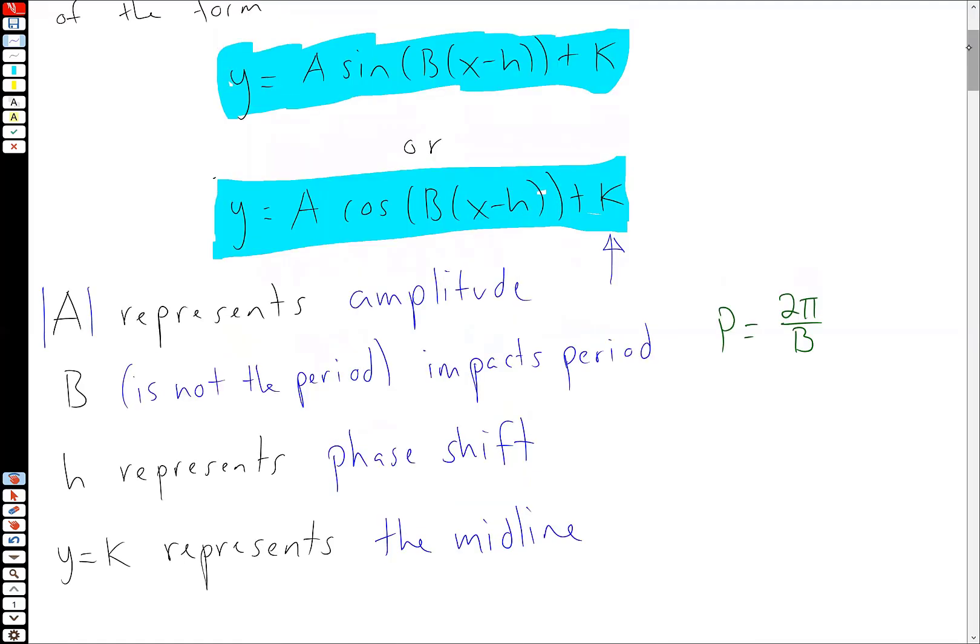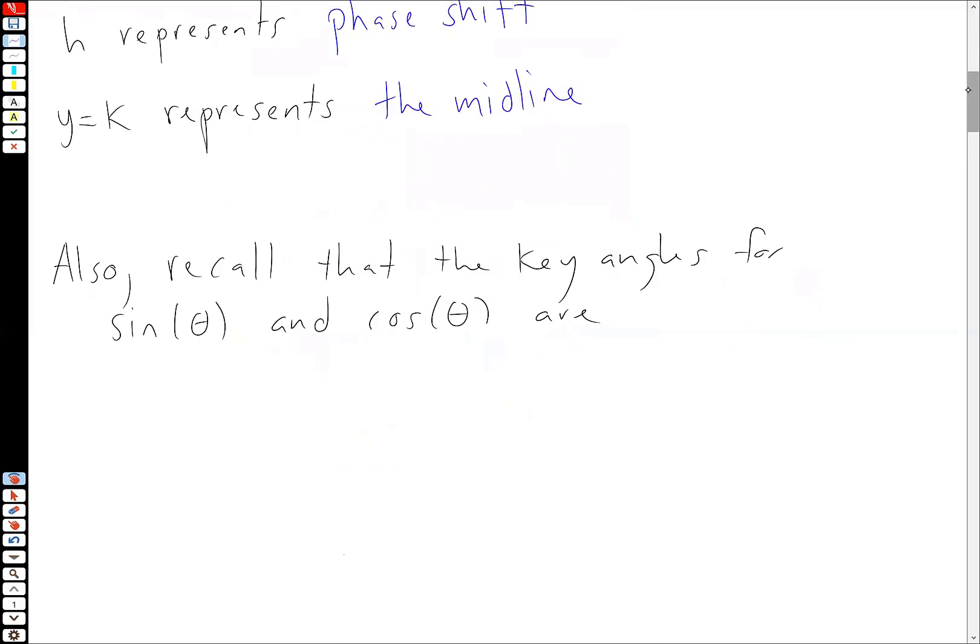So keep these in mind. And also recall from the last video that there are five, what I called five key angles for sine and cosine. And these angles were 0, π over 2, π, 3π over 2, and 2π.